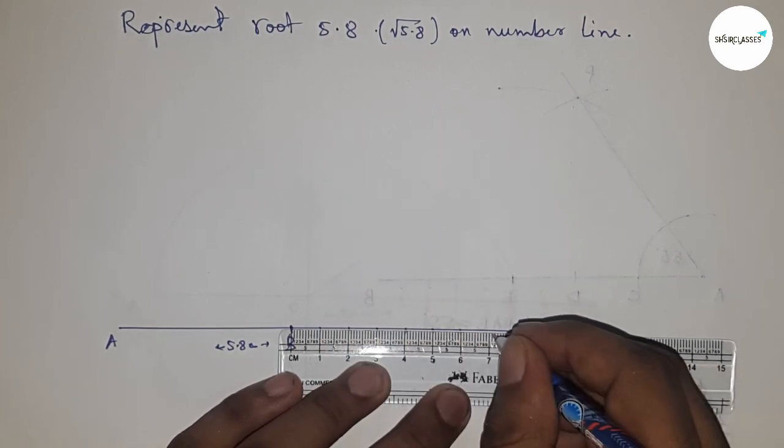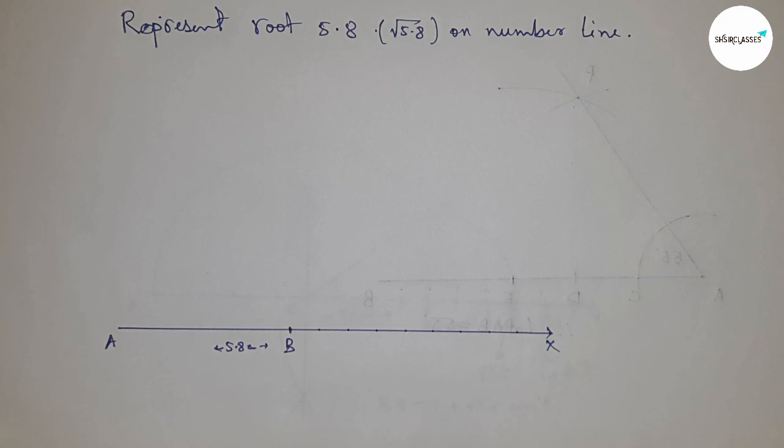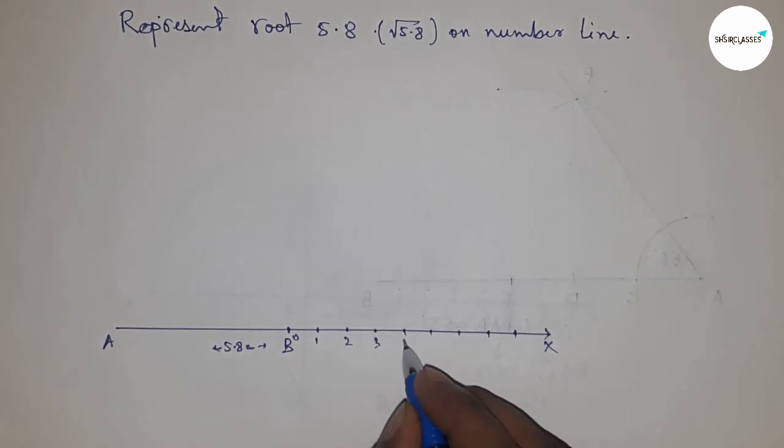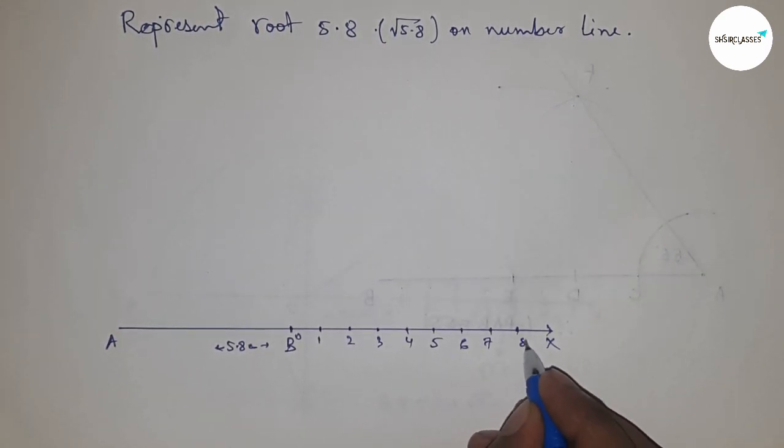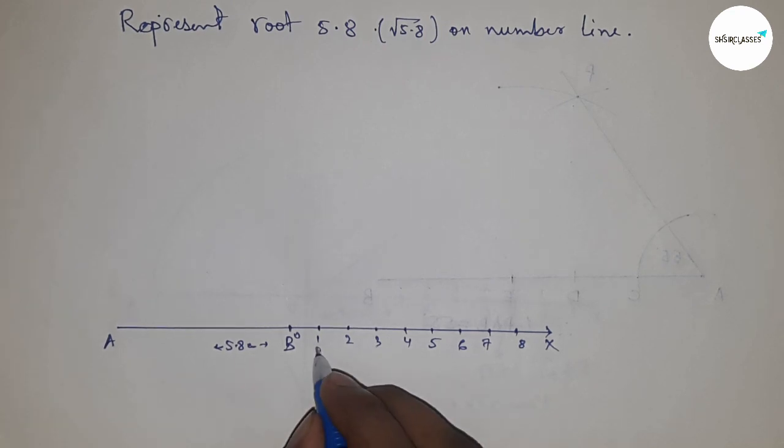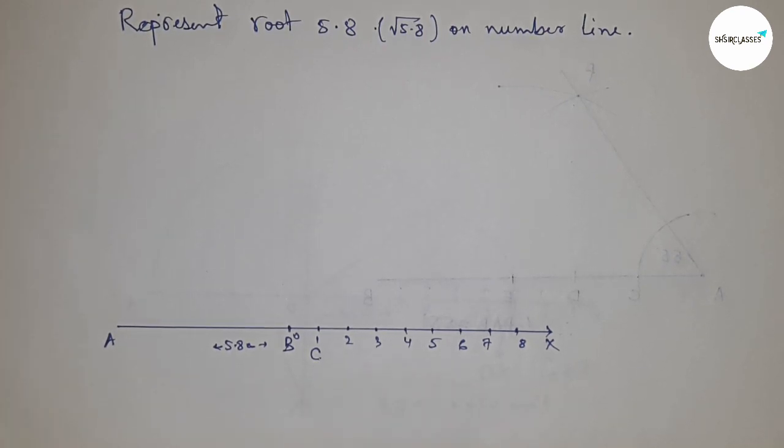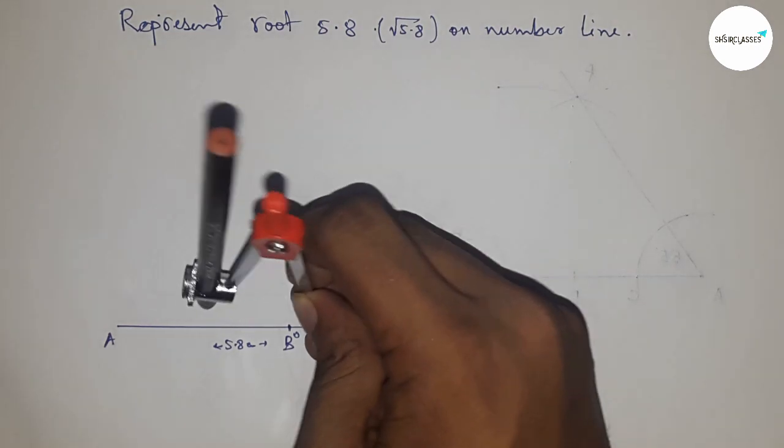Next, mark all the numbers from B to X. Mark the numbers on the line from B to X: this is 0, 1, 2, 3, 4, 5, 6, and so on. This is point C.